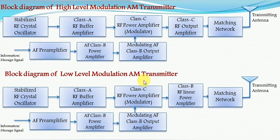Whereas with the use of a high efficiency class C power amplifier, a high power signal is generated and transmitted through the transmitting antenna in the high level modulation AM transmitter.